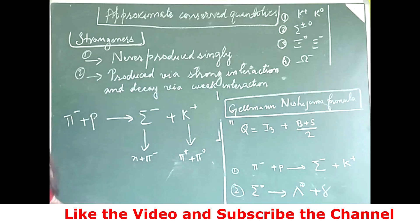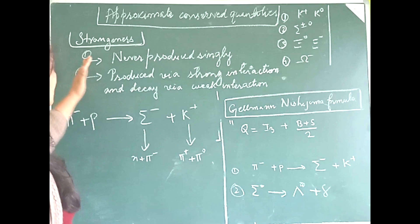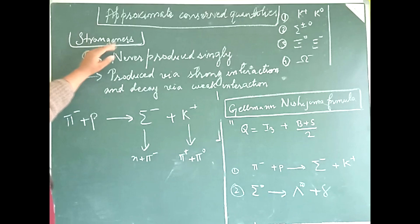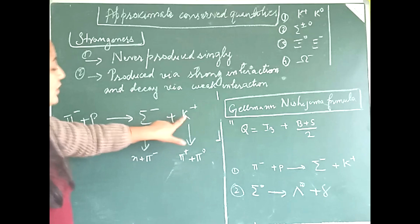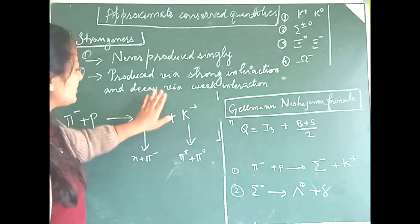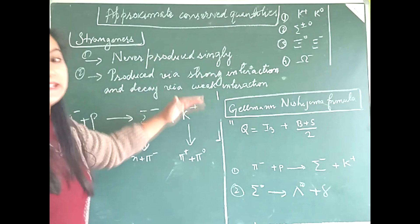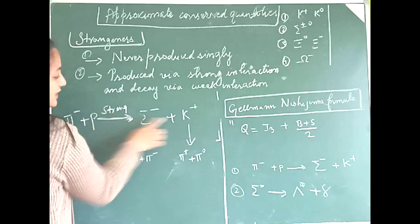Another approximate conserved quantity, like isospin, is strangeness. Strangeness is not conserved in all interactions — it is conserved only for certain interactions. What is strange about strangeness particles? Two things: first, they are not produced singly — sigma minus or k plus is not produced alone; they are produced in pairs. Second, they are produced by strong interactions but decay by weak interactions.